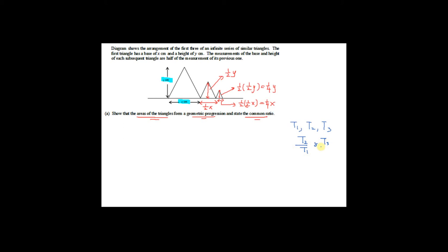Next, find the ratio of the second term divided by the first term, and the third term divided by the second term. The second term divided by the first term gives the common ratio, and the third term divided by the second term also gives the common ratio. If you can show these ratios are equal, then the three terms form a geometric progression. Now find T1, T2, and T3.